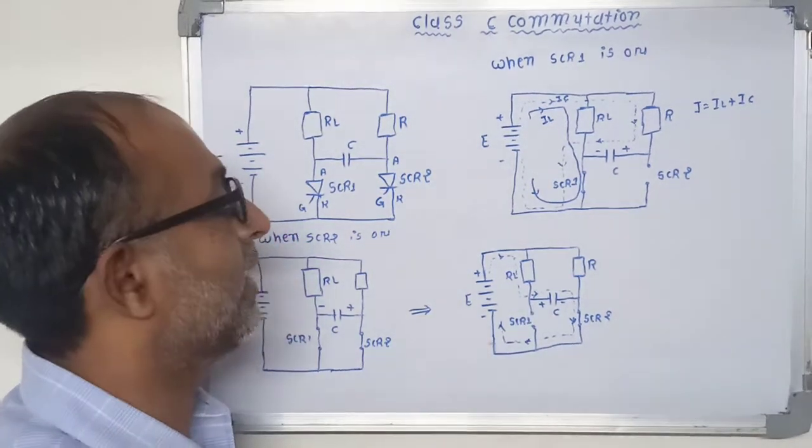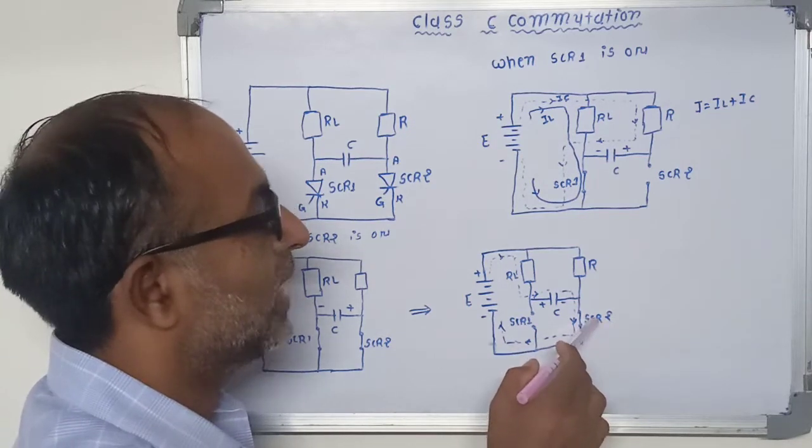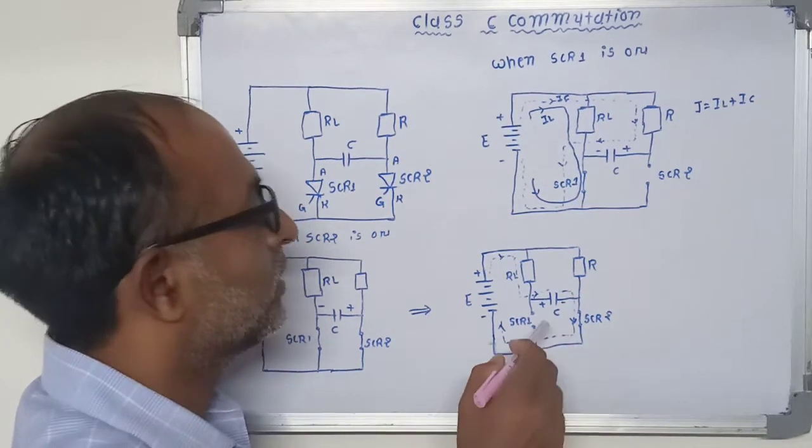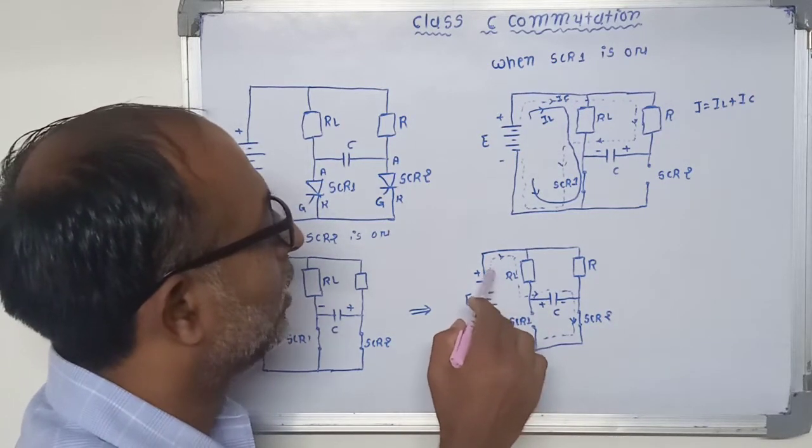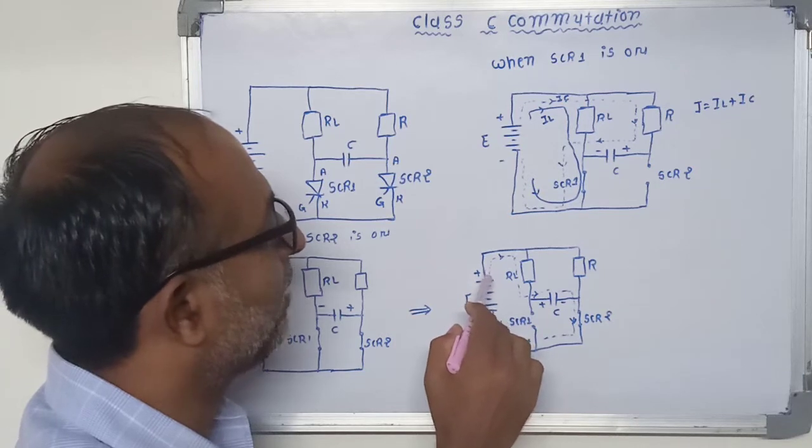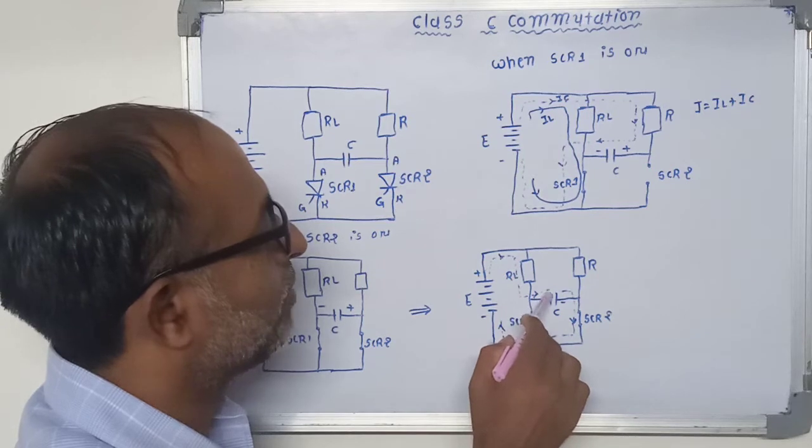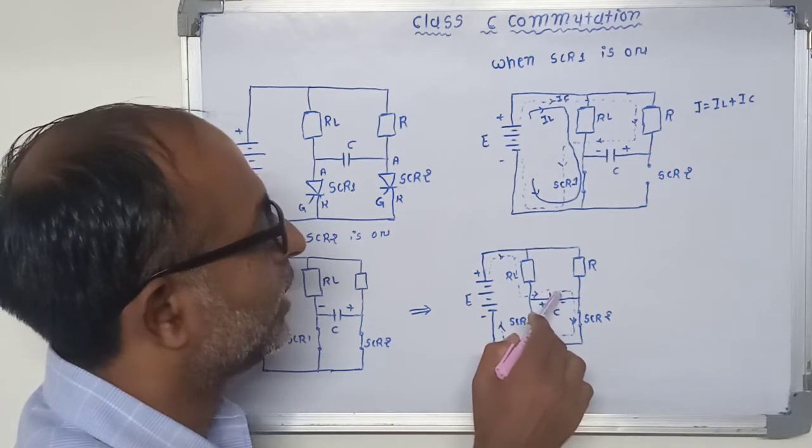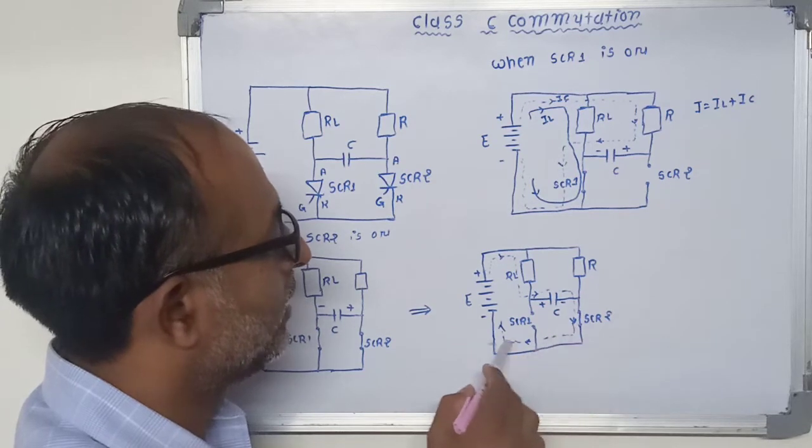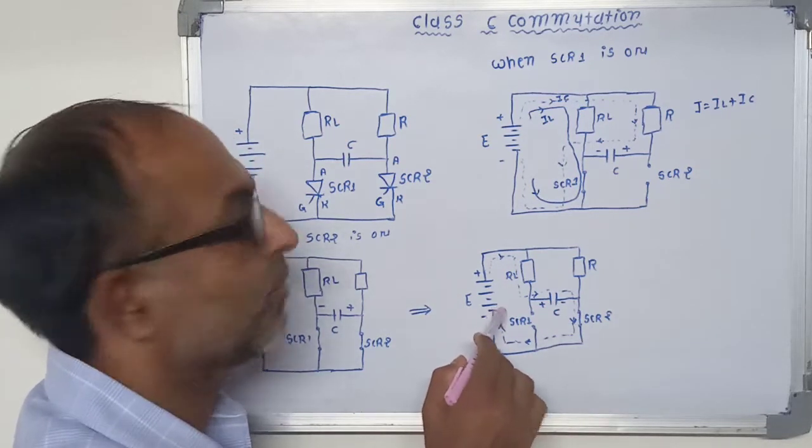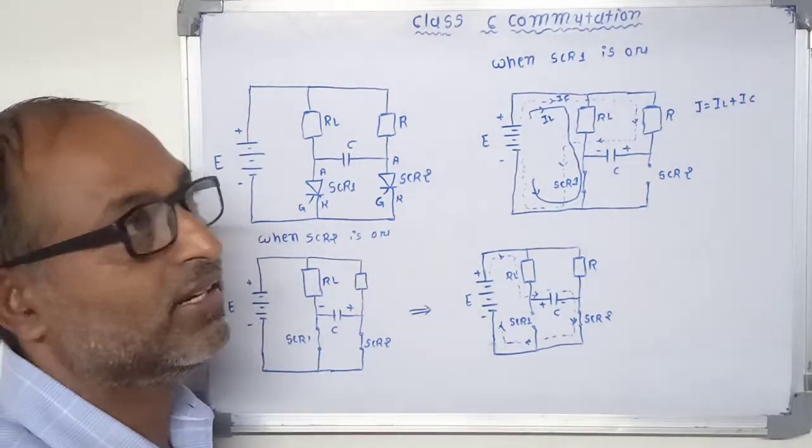So from that we can say that SCR1 is turned off due to the SCR2. So now that time this current is passing through, follow the path from E plus to RL, one plate of capacitor to another plate of capacitor. Then it is passing through SCR2 and E terminal of the battery.